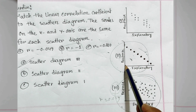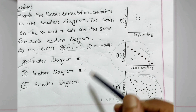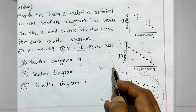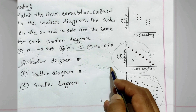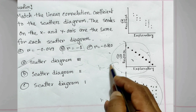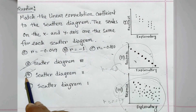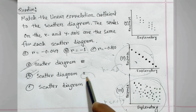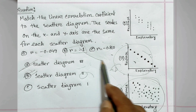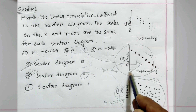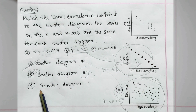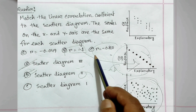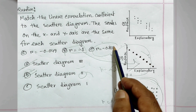This graph shows that the correlation coefficient r is equal to minus one. So we can say that scatter diagram B is equal to two — meaning B corresponds to this graph.